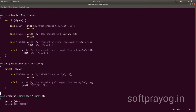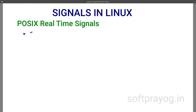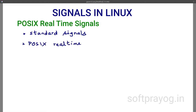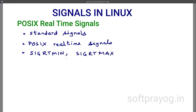POSIX real-time signals, as specified in the POSIX.1b standard, are beyond standard signals and are in the range defined by macros SIGRTMIN and SIGRTMAX. The default action for a POSIX real-time signal is to terminate the receiving process, so if you want to use a real-time signal you need to change the signal action using the sigaction call.